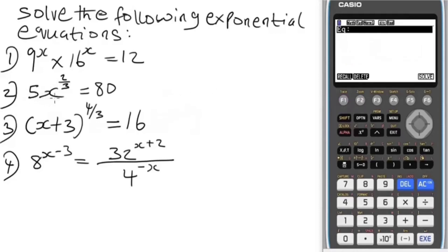The second equation is 5x to the power 2/3. The power is 2 over 3, equals 80. Let's input this. Assign x to zero.